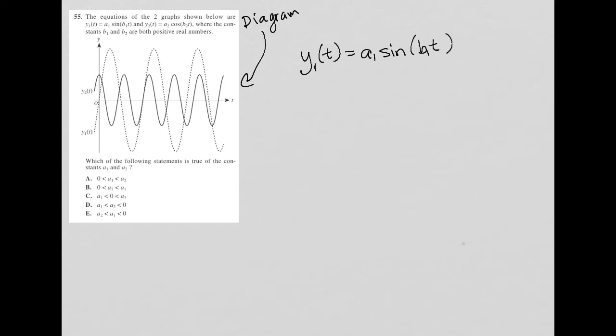And the other equation is y2 of t is equal to a2 cosine b2 t, where the constants b1 and b2 are both positive real numbers. So b1 and b2 are greater than zero.